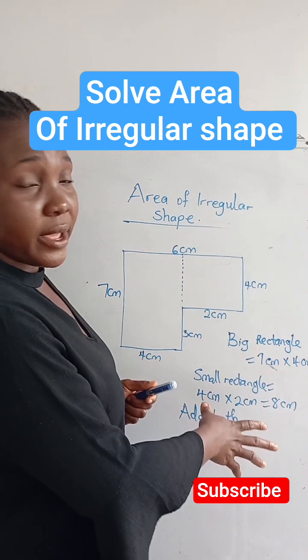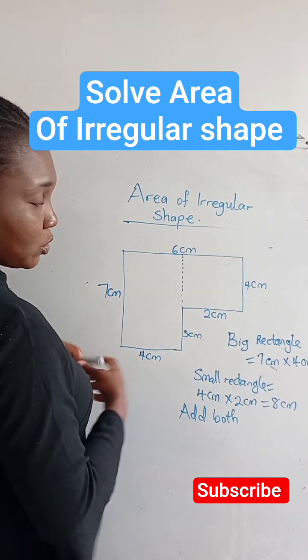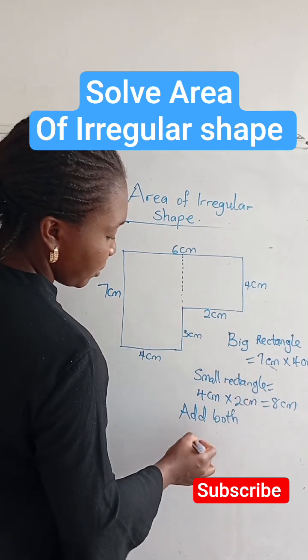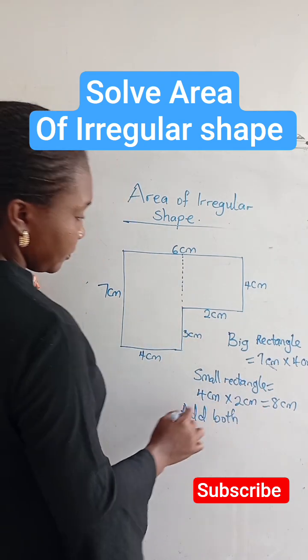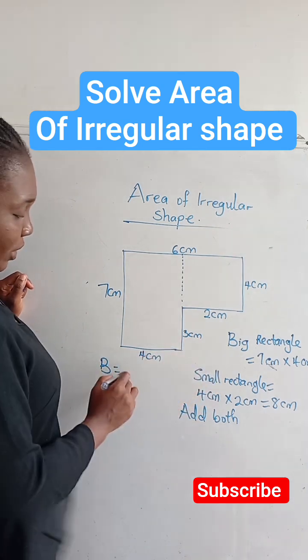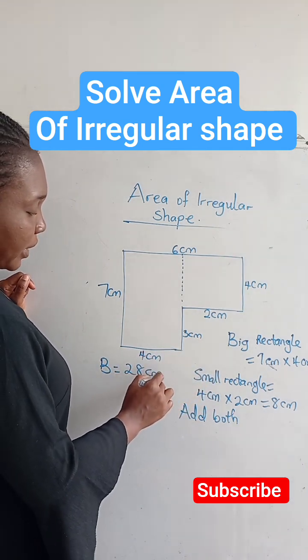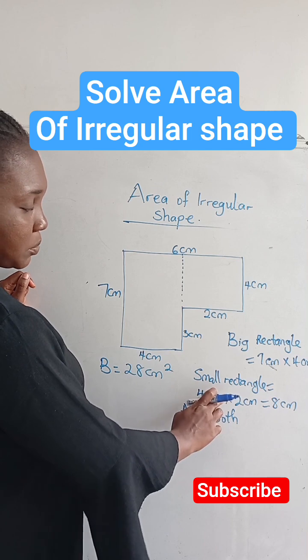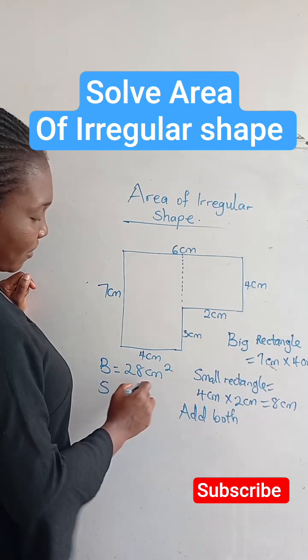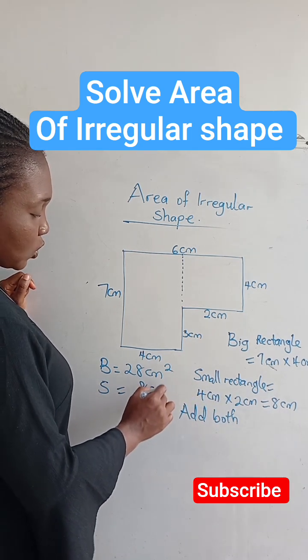So we're going to add the areas of both rectangles which we have found. For the bigger rectangle B, we have 28 centimeters squared, and for the small rectangle S, we have 8 centimeters squared.